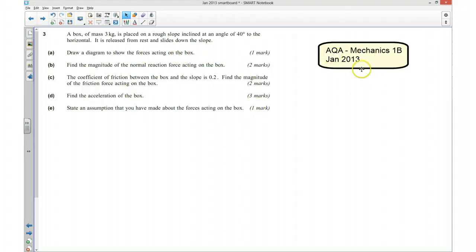Hi, this is question 3 from the AQA Mechanics 1B January 2013 paper. This question is saying that a box of mass 3 kilograms is placed on a rough slope inclined at an angle of 40 degrees to the horizontal, it is released from rest and slides down the slope.